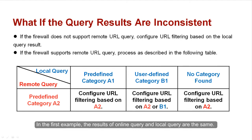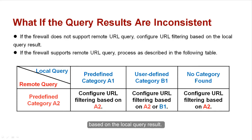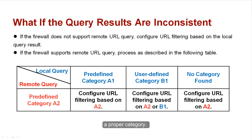In the first example, the results of Online Query and Local Query are the same. In the second example, however, the results are different. In this case, treat this issue based on the specific situation. If the firewall does not support Remote URL Query, configure URL filtering based on the Local Query result. However, you can refer to the Online Query result to add the URL to a proper category.